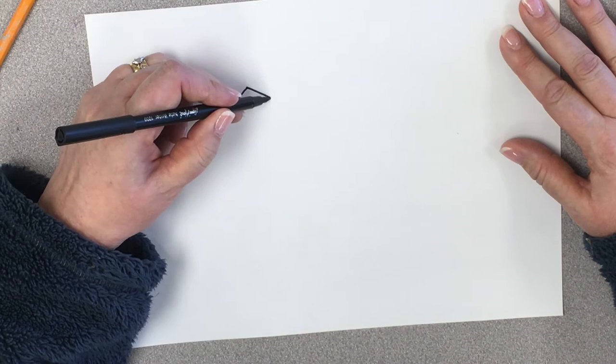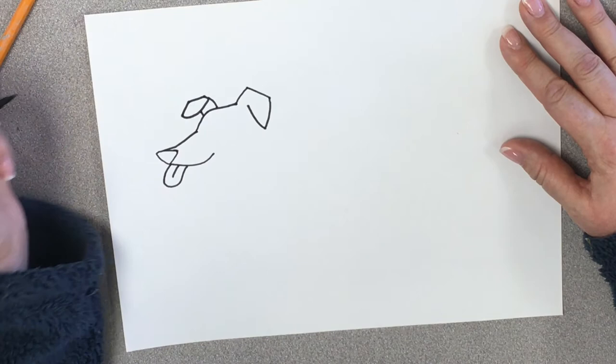So it comes up, goes flat, comes down, comes back around. And that is the ear on the front side.